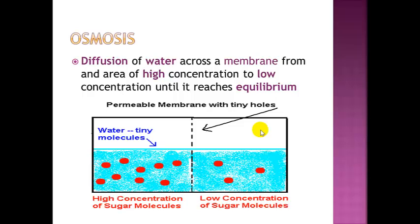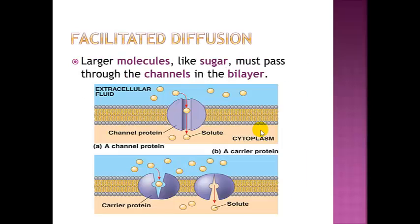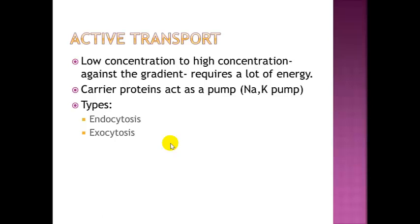Another type of passive transport is osmosis — the diffusion of water across a membrane from high concentration to low concentration until it reaches equilibrium. Osmosis is the movement of water; diffusion is the movement of particles or molecules. Both go from high concentration to low concentration and require no energy. The last type of passive transport is facilitated diffusion, where large molecules like sugars must pass through protein channels in the bilayer because they're too big to slip straight through the phospholipids.